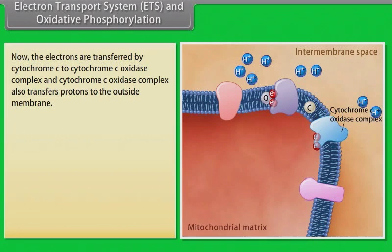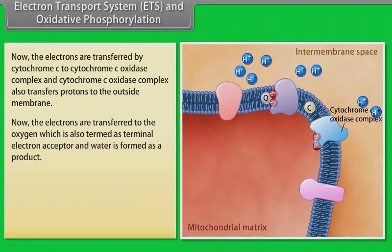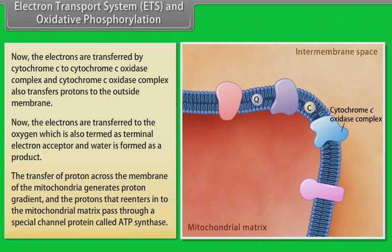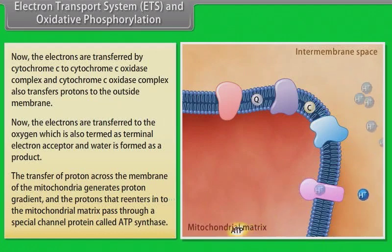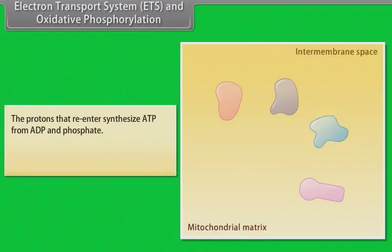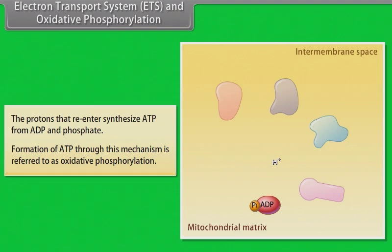The electrons are transferred by cytochrome C to cytochrome C oxidase complex, which also transfers protons to the outside of the membrane. The electrons are then transferred to oxygen, the terminal electron acceptor, and water is formed as a product. The transfer of protons across the mitochondrial membrane generates a proton gradient, and the protons re-entering the mitochondrial matrix pass through a special channel protein called ATP synthase, synthesizing ATP from ADP and phosphate. This formation of ATP is termed oxidative phosphorylation.